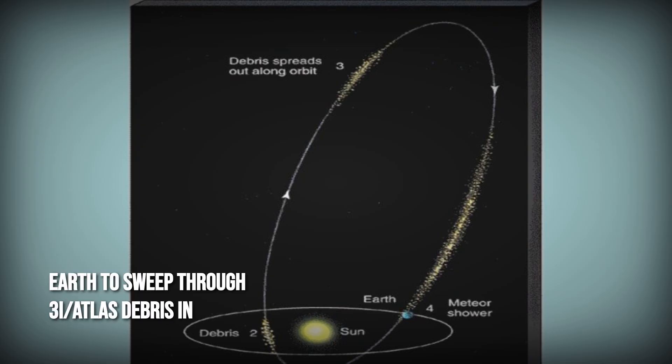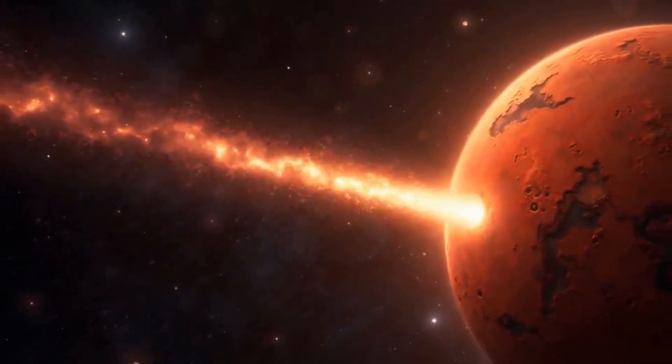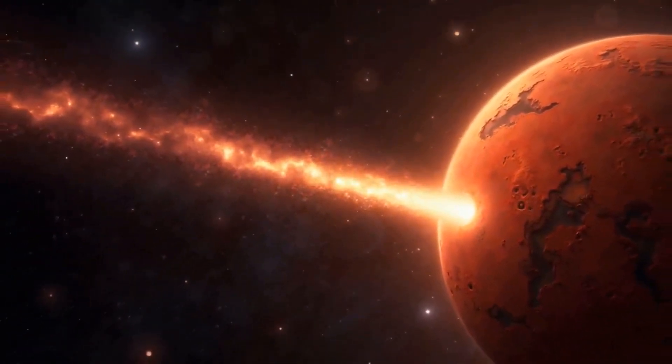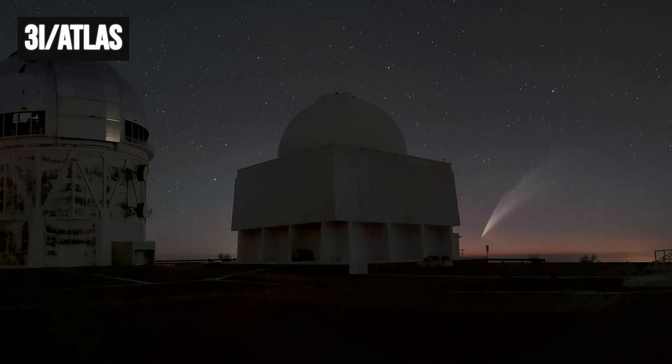Earth's orbit will sweep through the faint debris left by 3I/Atlas in 2026, sparking everything from mainstream meteor forecasts to wild speculation about interstellar artifacts. Avi Loeb's team even proposes sending a probe, hoping to catch a fragment from another star.